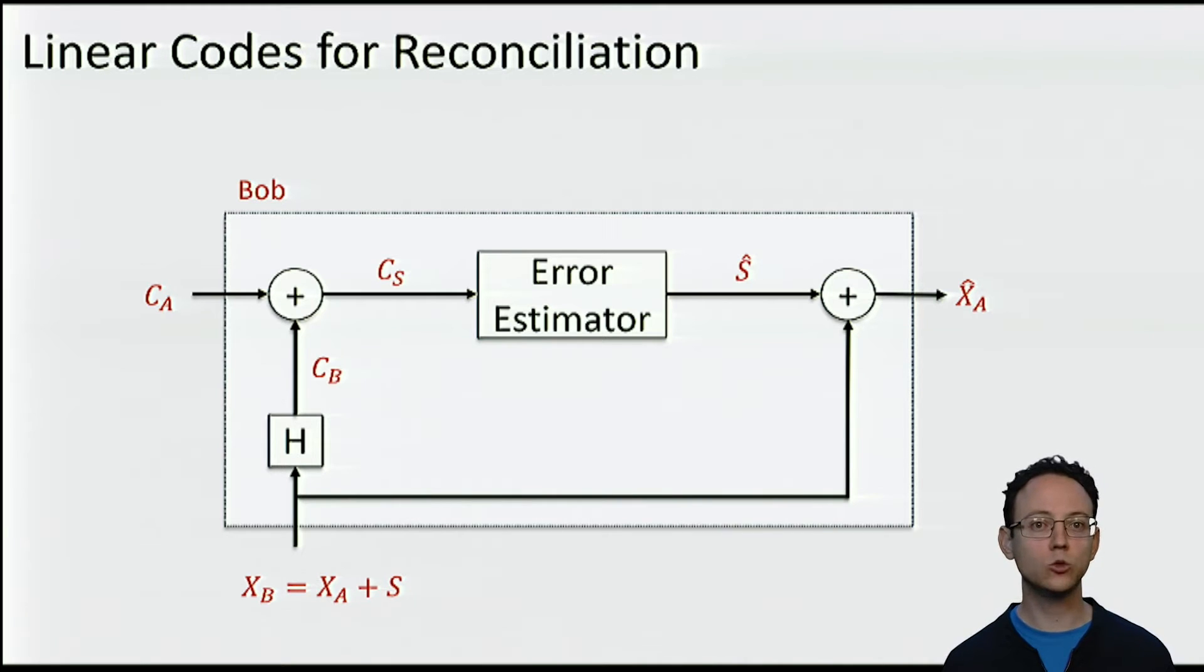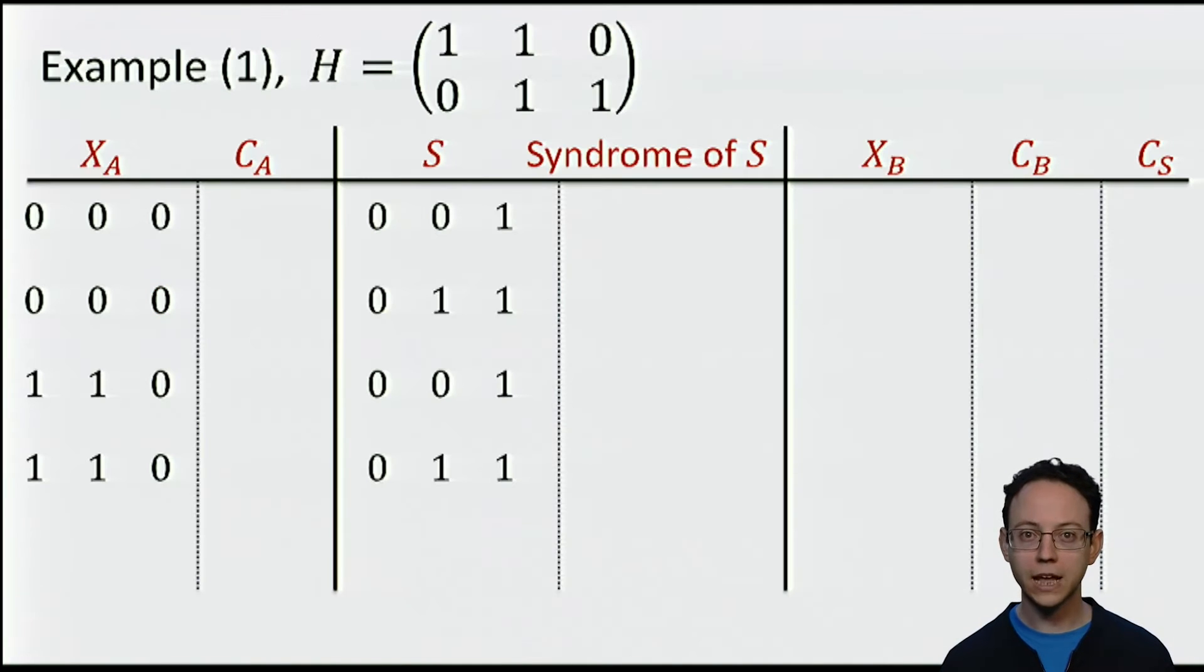Then CS is sent into a module that estimates the error string S and outputs the estimate that we call S hat. Finally, S hat is added to XB and this will be the decoded string that Bob will receive. A first important comment is that XA hat is exactly XA plus the difference between the estimated error and the real error vector. This is very easy to prove. First we write XA hat as XB plus S hat and then we write XB as XA plus S. What this means is that if the estimate is correct, XA hat will equal XA.